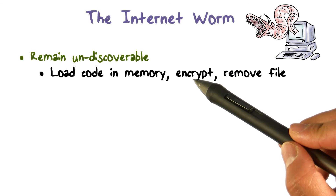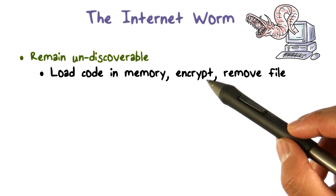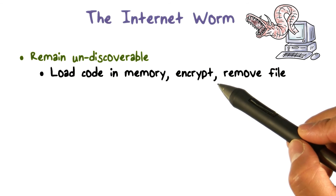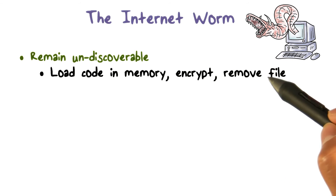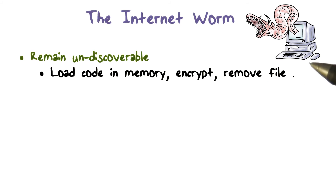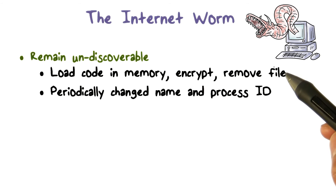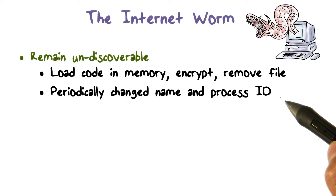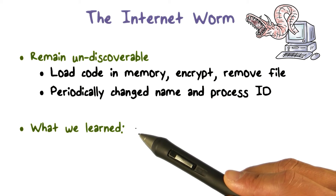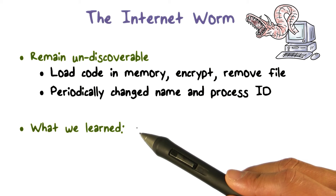The internet worm also employed a number of tricks to hide itself. For example, the worm code was loaded into memory, it was encrypted and decrypted when necessary, and the original file was removed from the hard drive so that the user would not be able to see the worm program. The worm even periodically changed its process name and process ID so that even when a system admin looked at what programs were running on the server, they could not easily discover the internet worm.